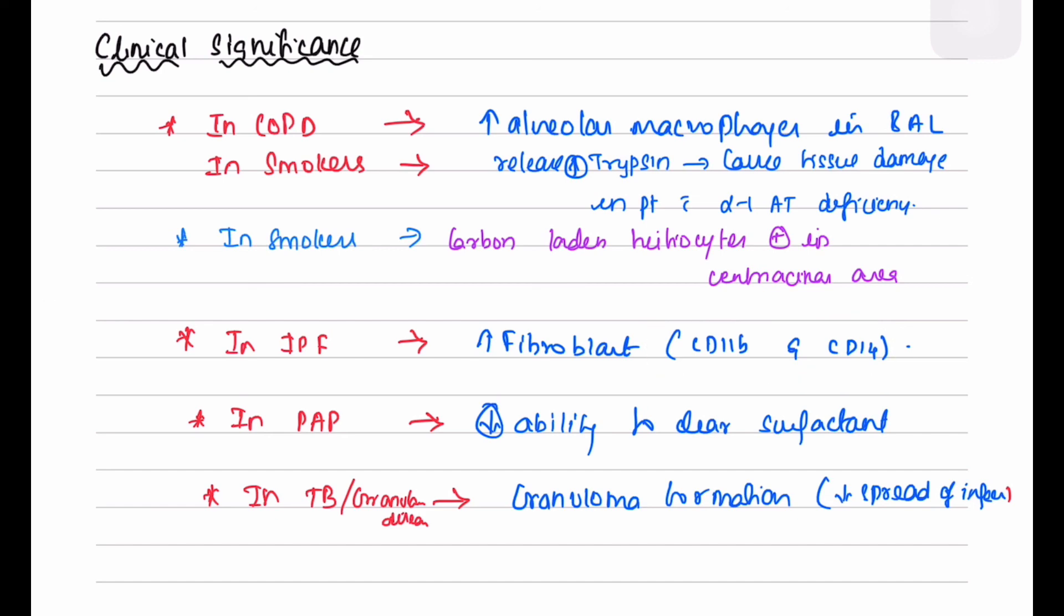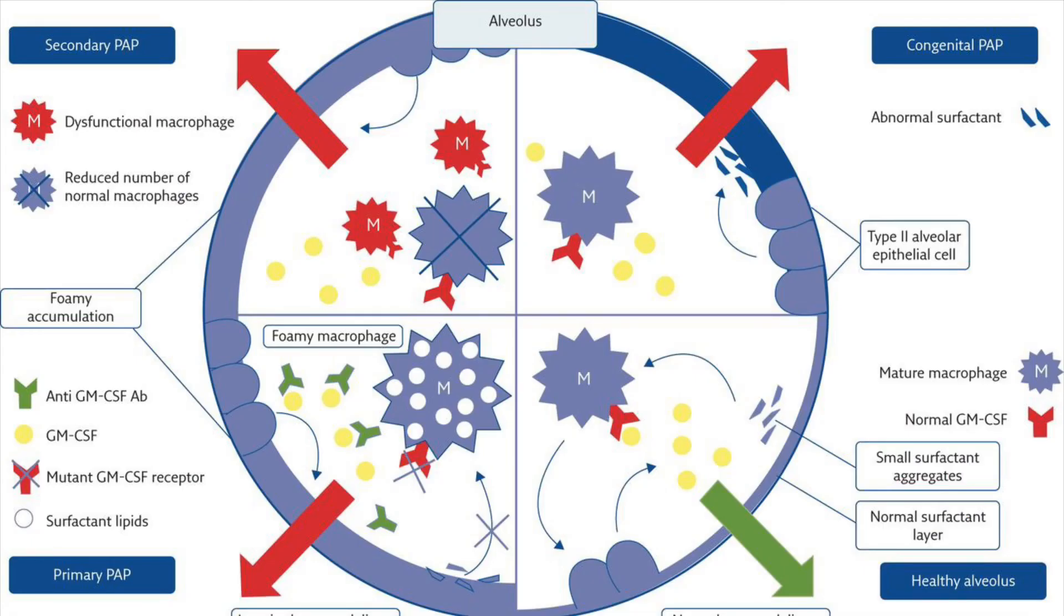In pulmonary alveolar proteinosis, the disruption of GM-CSF signaling results in decreased ability of the alveolar macrophages to clear surfactant, resulting in abnormal surfactant accumulation.